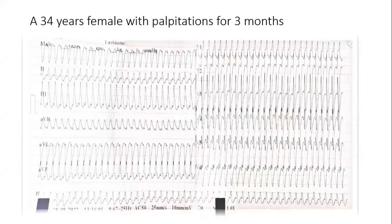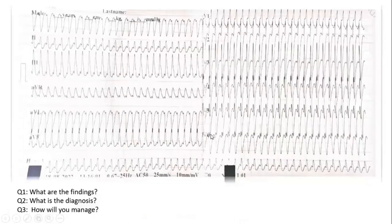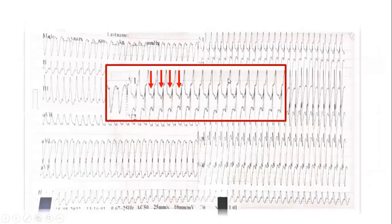This is a broad complex tachycardia, fairly regular, with right bundle morphology coming from LVOT — this looks like LVOT VT. Let me give you a hint and zoom in. Now what do you think is happening? I'll zoom in on lead V1. There are some humps, you can see those humps over here as well, and they are definitely not part of a QRS. What do you think about this — are these retrograde P waves?